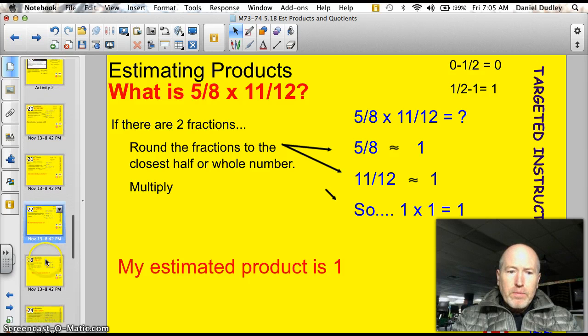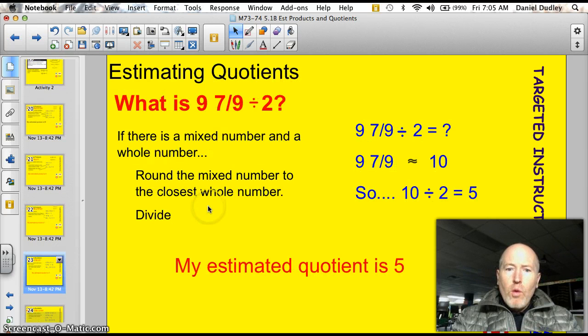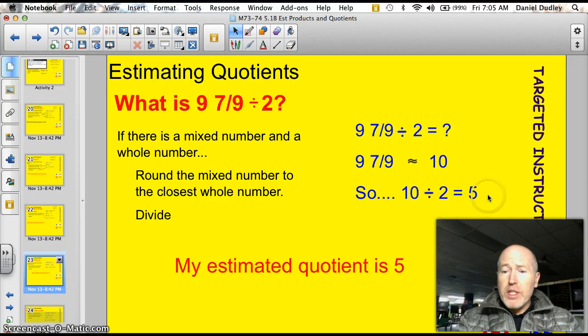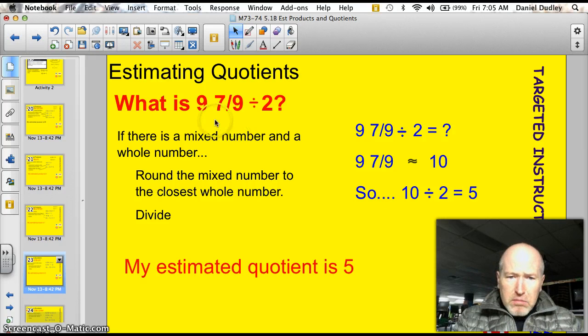Well, here's another example. What about estimating quotients? Well, this one's pretty straightforward. We've got 9 and 7 nines divided by 2. So, we've got 9 and 7 nines, and 9 and 7 nines is almost 10, so we're going to call that 10. So, 10 divided by 2 is 5. My estimated quotient is 5. Go up and double check. Yeah, about 10 divided by 2. 5 is good. 5 is real good.